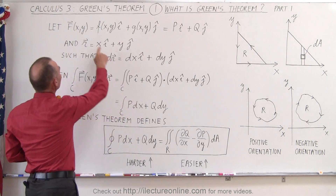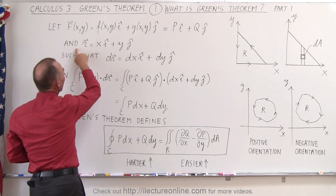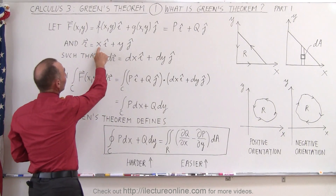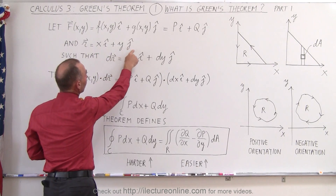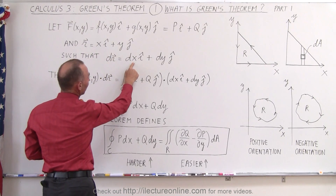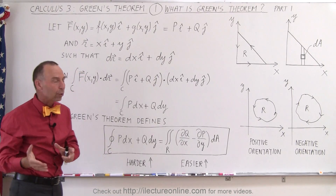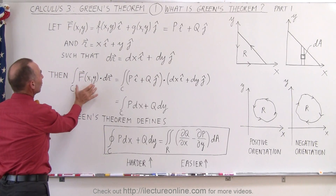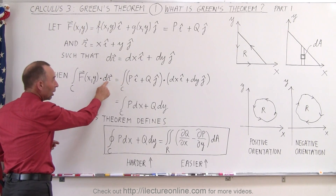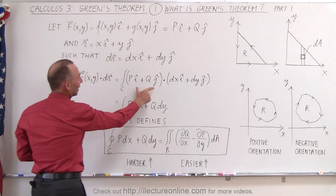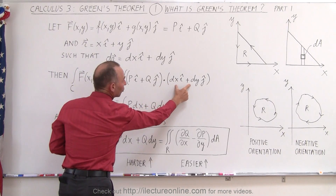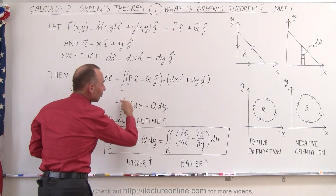If we assume this to be the vector field, then we have a position vector at any point in the xy-plane — a certain distance in the x-direction and a certain distance in the y-direction. If we take the differential dr, this can be expressed as dx in the i-direction plus dy in the j-direction. Going back to the definition of a line integral, we take the vector field and dot it with the differential of the position vector, and we get this expression right here.